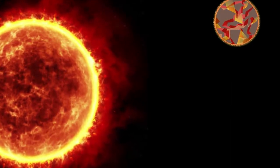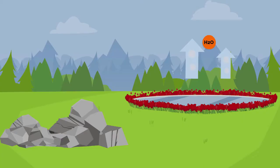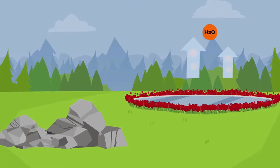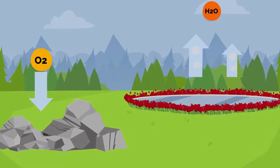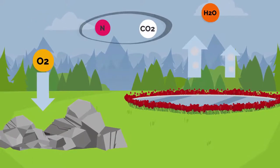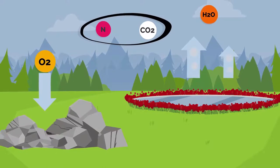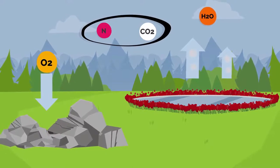The oceans will be evaporating and turning into hydrogen and oxygen. As the water evaporates, the hydrogen will drift to space and the oxygen will interact with surface rocks. Nitrogen and carbon dioxide are likely to become the major elements of the atmosphere, just like Venus is today.